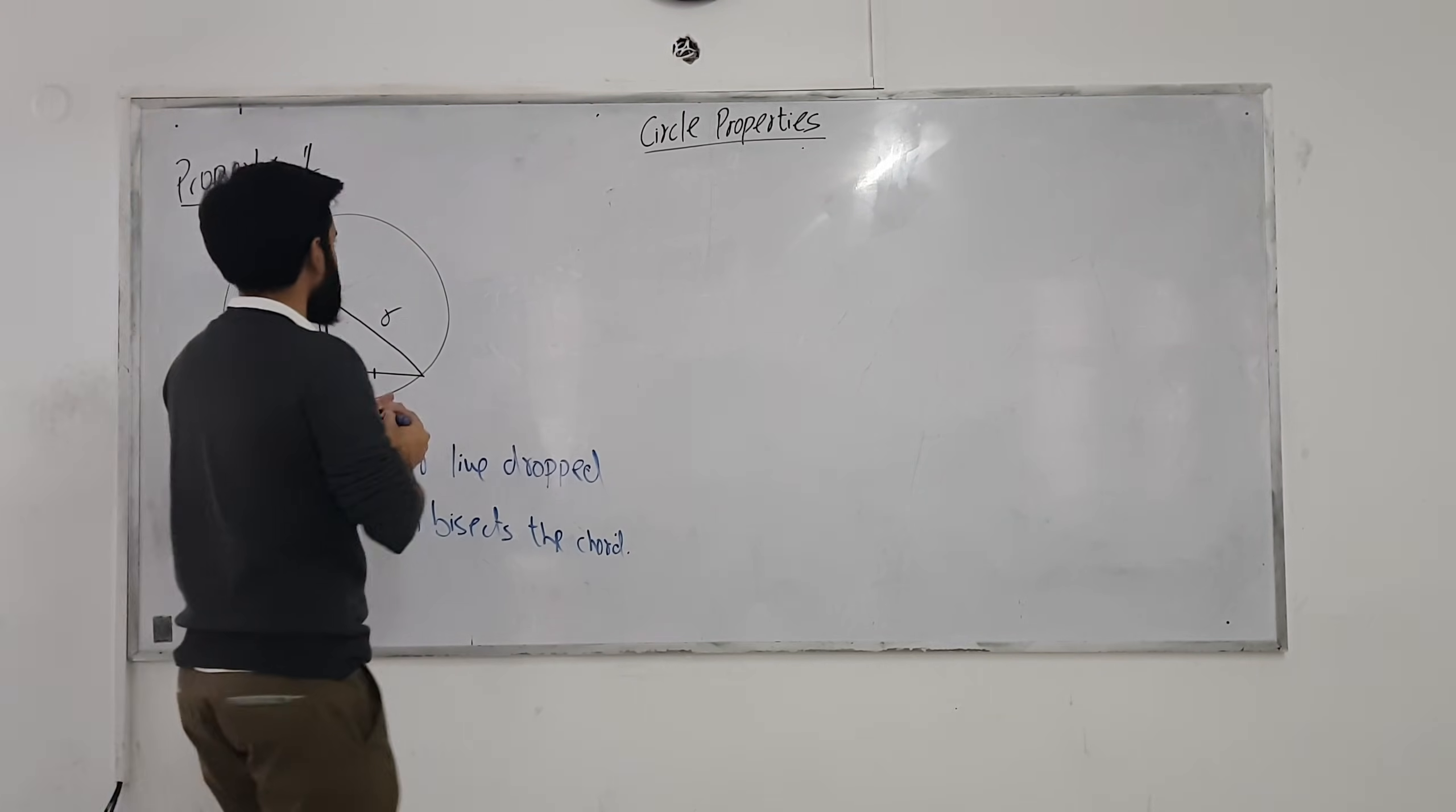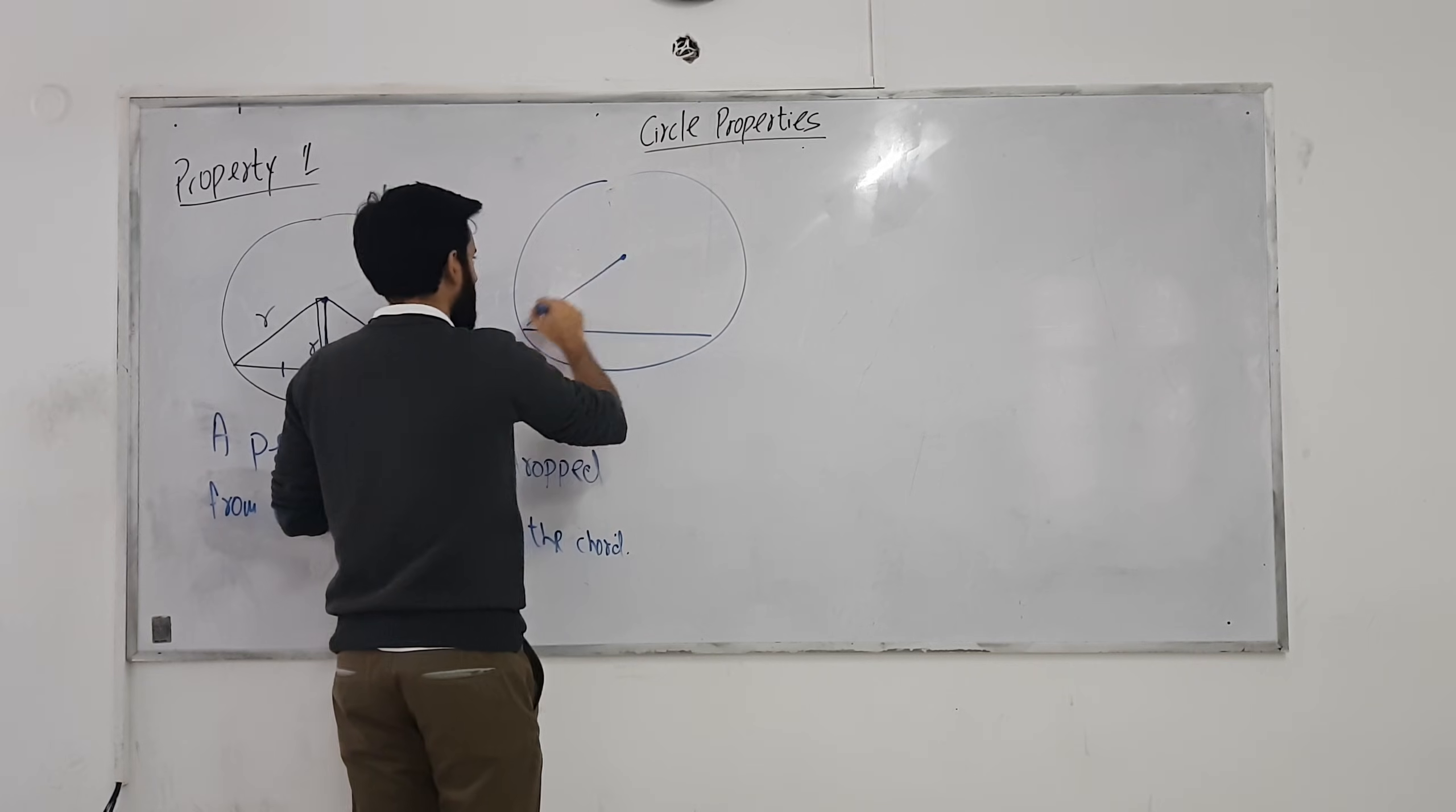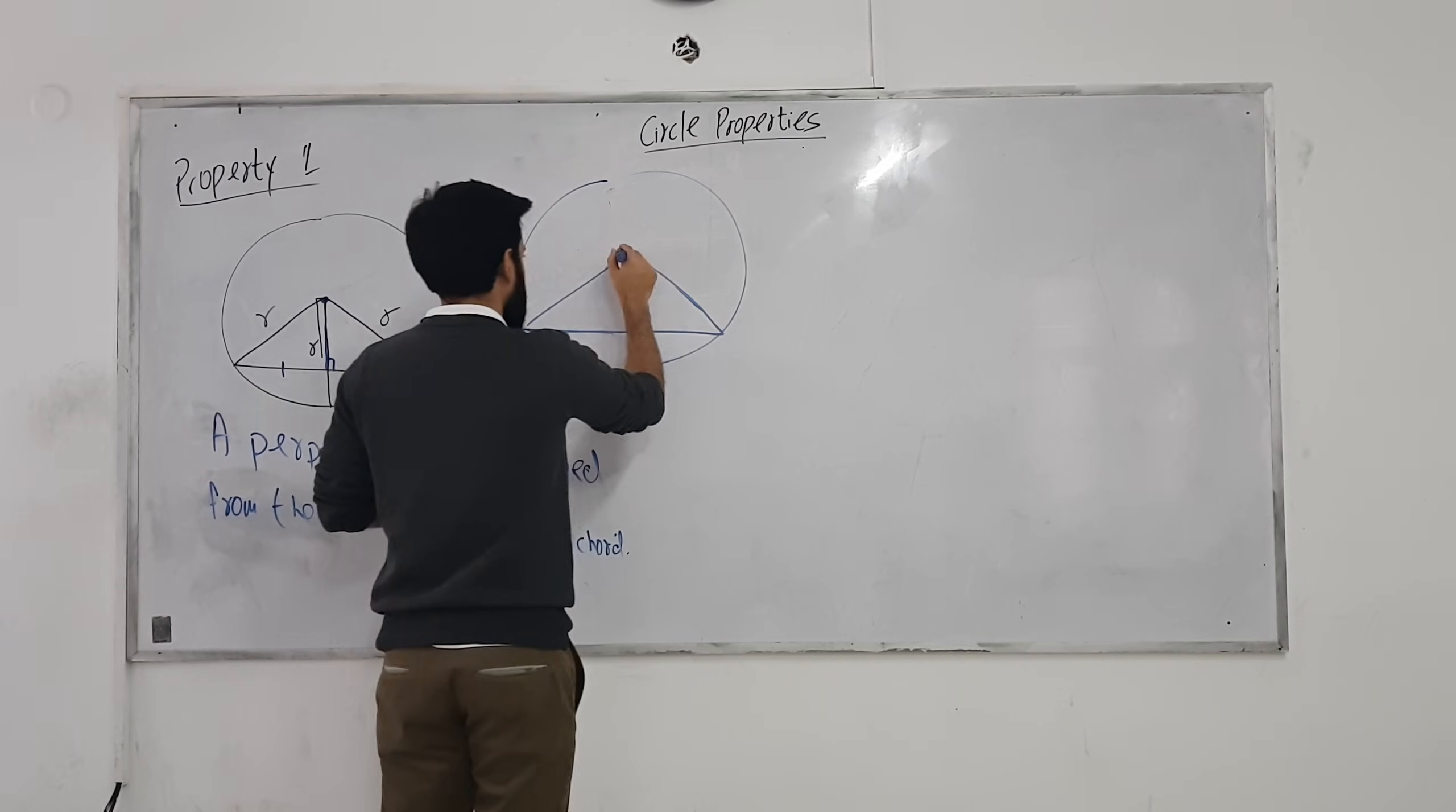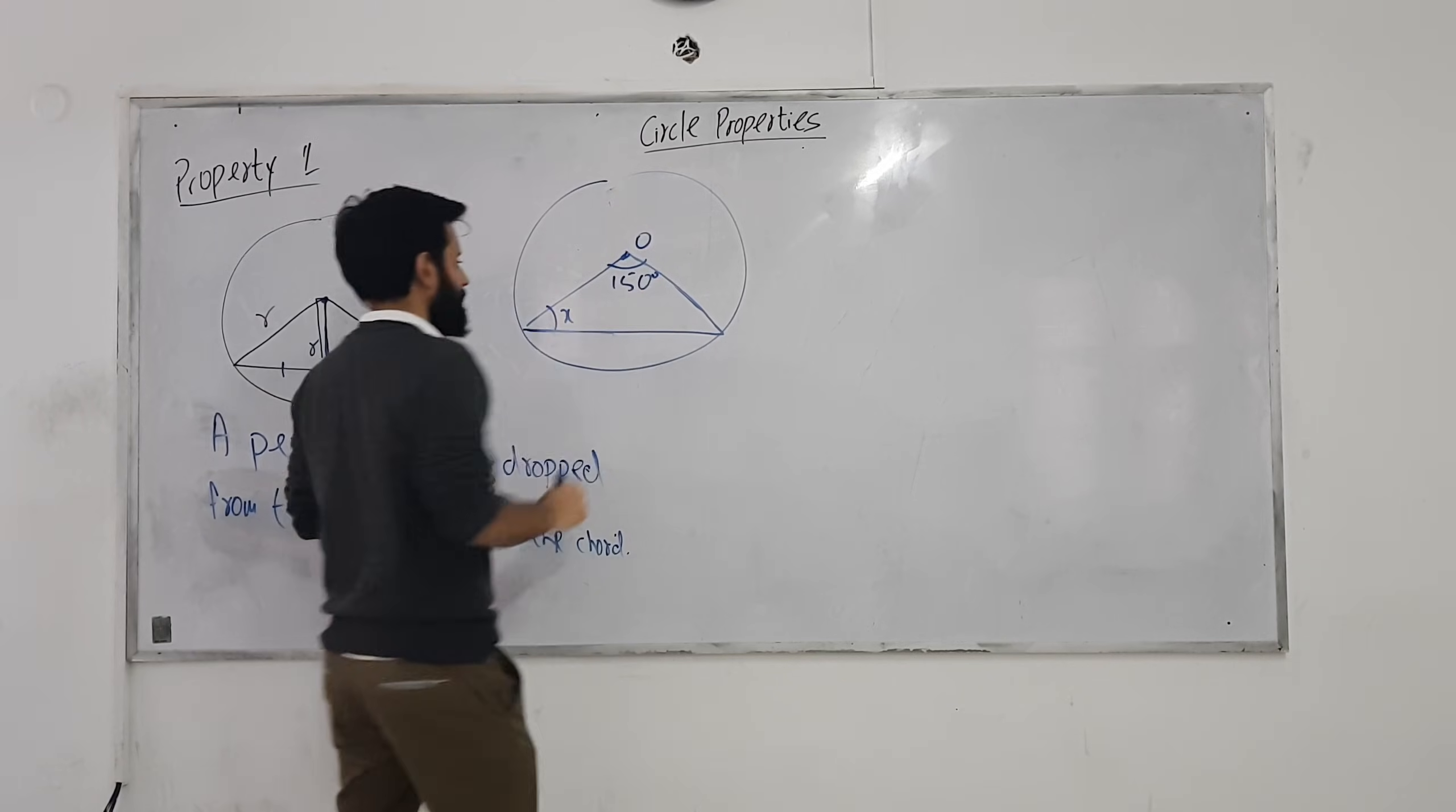I don't know how it comes to the question. Not related to this, but I'm going to talk in general. You have a chord. Here's your center. And suppose you guys are given this angle, 150 degrees, and you're asked to figure out the value of x. How do you do it?